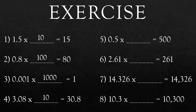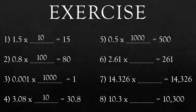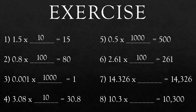Question 5: 0.5 × ___ = 500. How many places will you shift in 0.5 to get 500? 3. So what will you multiply? Yes, the answer is 1000. Question 6: 2.61 × ___ = 261. How many places will you shift in 2.61 to get 261? 2. So multiply by 100. Question 7: 14.326 × ___ = 14,326. How many places will you shift in 14.326 to get 14,326? 3. So what will you multiply? Yes, the answer is 1000.